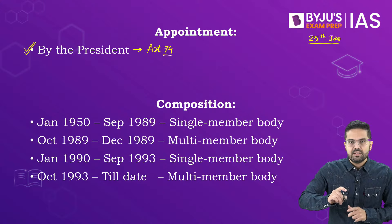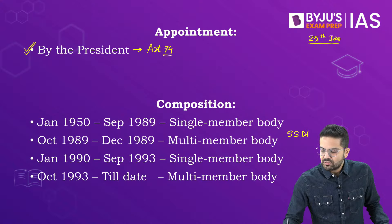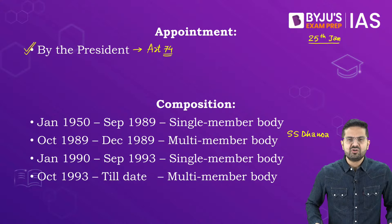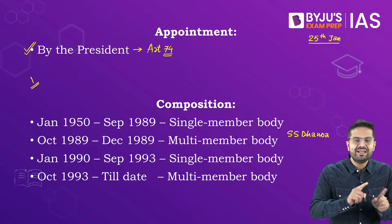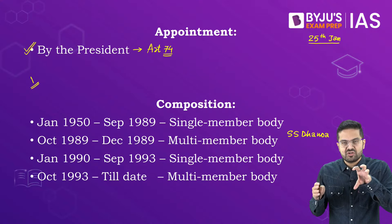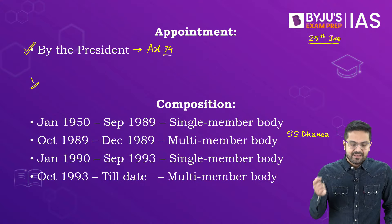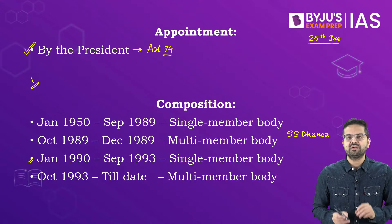VS Segal accepted the removal with grace, but SS Dhanova approached the court, asking how the President could remove an election commissioner just through a notification. The court clarified that the Constitution mandatorily provides for one person as Chief Election Commissioner, while the number of other members is entirely up to the President. From January 1990 to September 1993, the Election Commission was again a single member body.